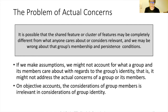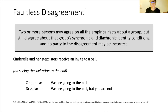We might not address the actual concerns of the group or its members. On objective accounts, the considerations of group members are irrelevant to considerations of group identity. The second problem is the problem of faultless disagreement: two or more persons may agree on all the empirical facts about the group but still disagree about that group's synchronic and diachronic identity conditions, and no party to the disagreement need be incorrect.